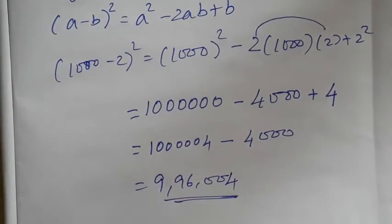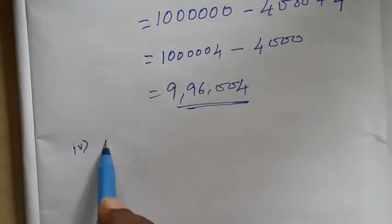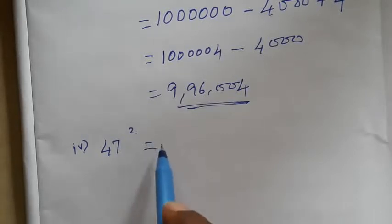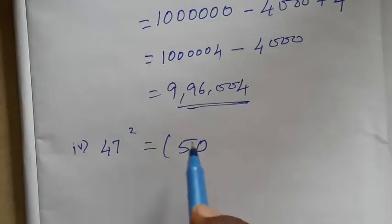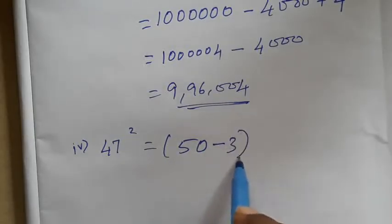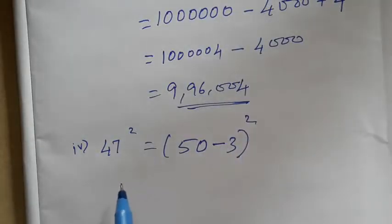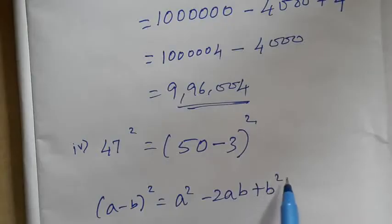If you add these two values, it's one of the answers: 9 divided by 9 divided by 4. If you add the answer to the answer, 4 times is equal to 4. If you add the answer for 45, we have to write a whole square. If you know the formula, we will write A minus B whole squared: A squared minus 2AB plus B squared.